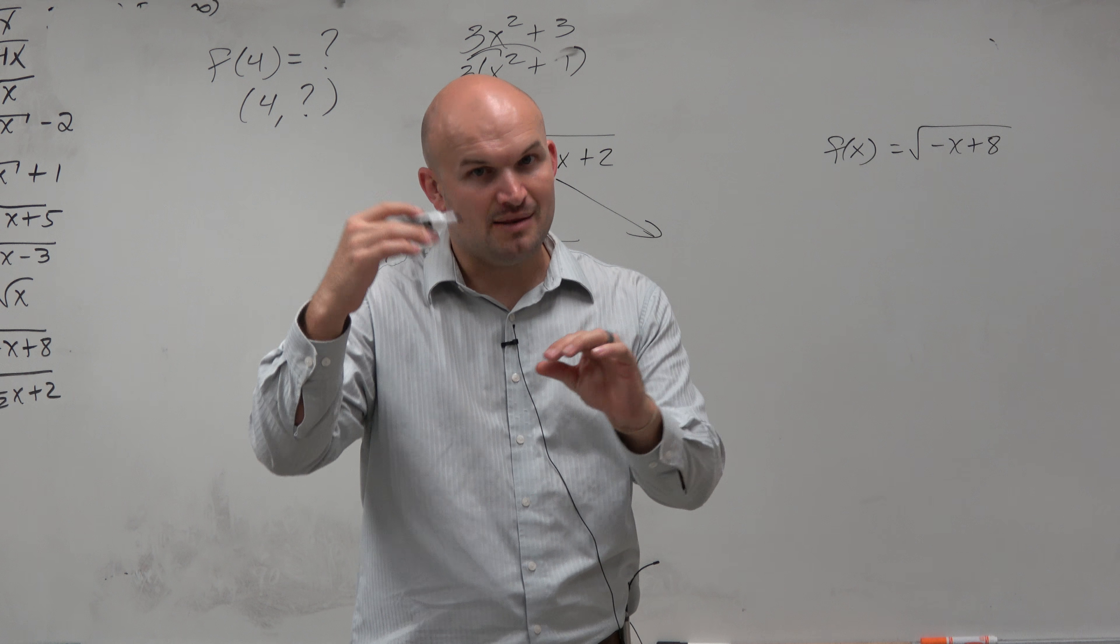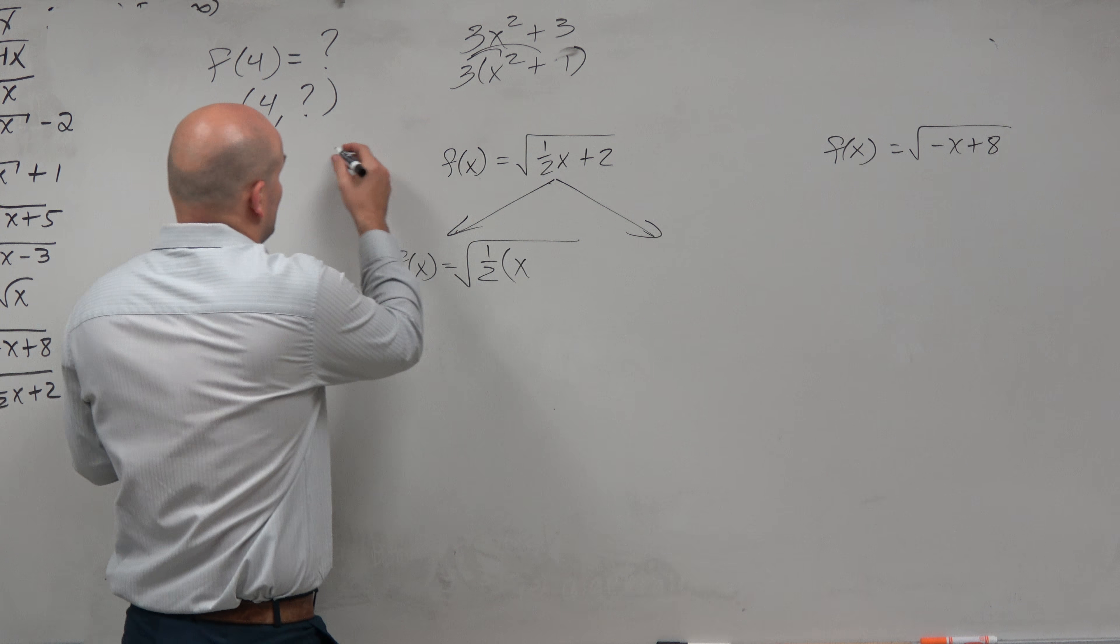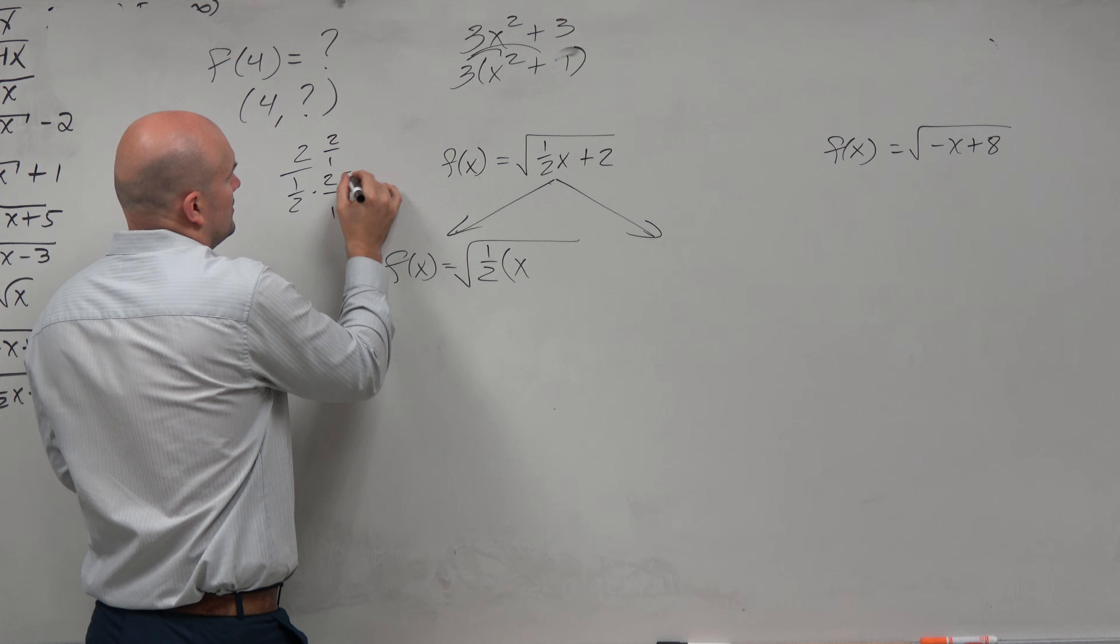Well, before you answer, dividing by a fraction is the same thing as multiplying by its reciprocal. Or you could think about it like this: 2 over 1 half, multiplied by 2 over 1, equals 4.